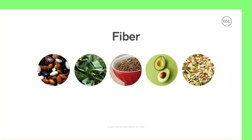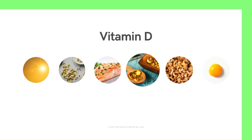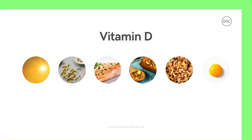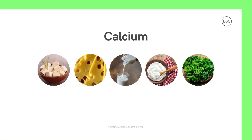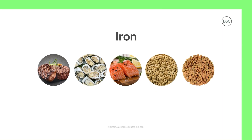Fiber helps to keep you fuller for longer and also helps to keep the digestive system working properly. Vitamin D is essential for bone health and a strong immune system. Potassium helps the body manage blood pressure and is important for nerve and muscle function. Calcium is necessary for healthy bones and teeth, and is also important for muscles and heart health. Iron helps to move oxygen around your body through the blood.